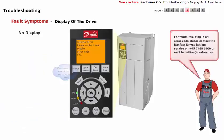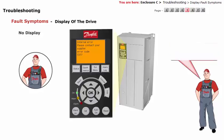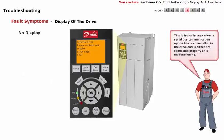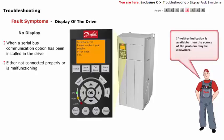An error code exists in the FCU automation drive which indicates that communications may have failed with the control card. For faults resulting in an error code, please contact the Danfoss drives hotline service on 457488 6100 or mail to hotline@danfoss.com. This is typically seen when a serial bus communication option has been installed in the drive and is either not connected properly or is malfunctioning. If neither indication is available, then the source of the problem may be elsewhere.